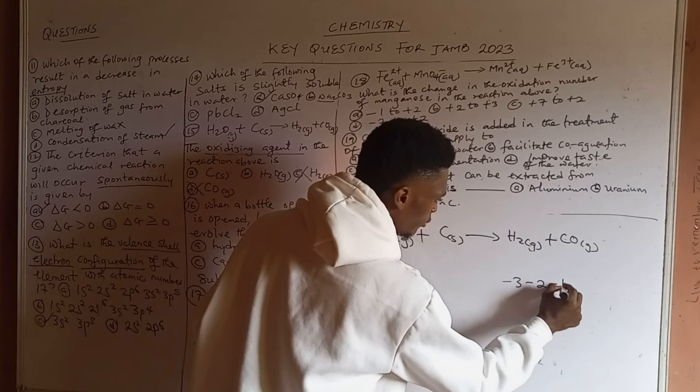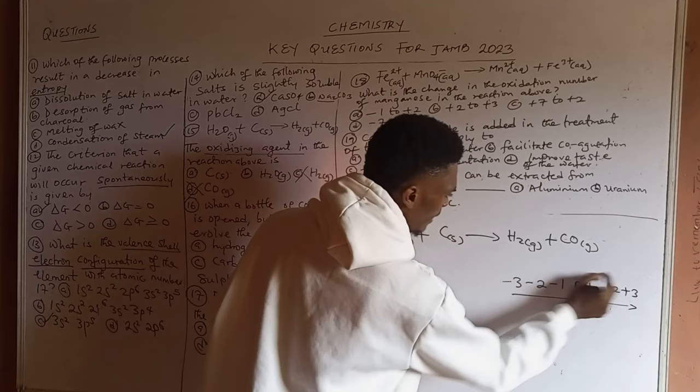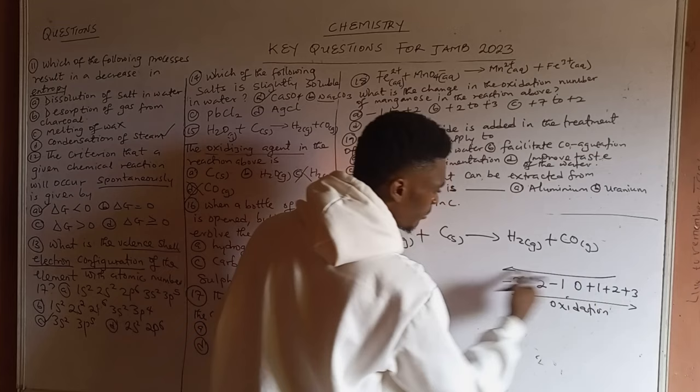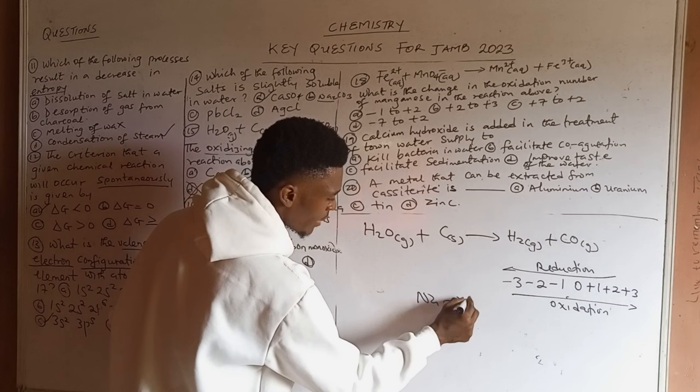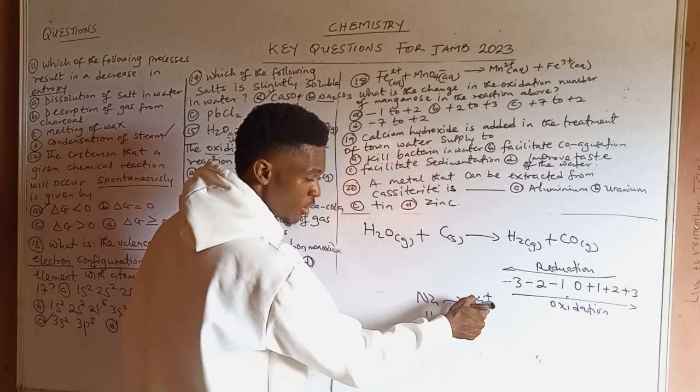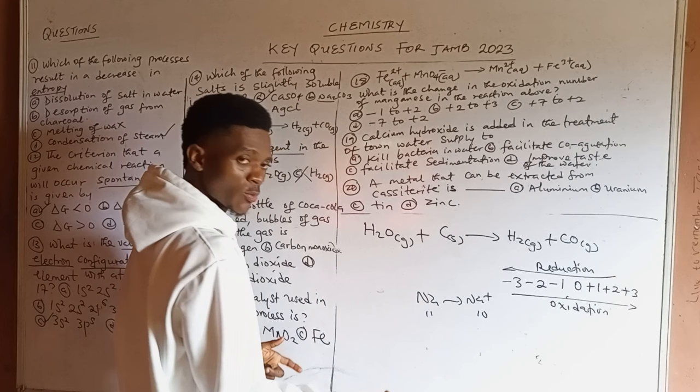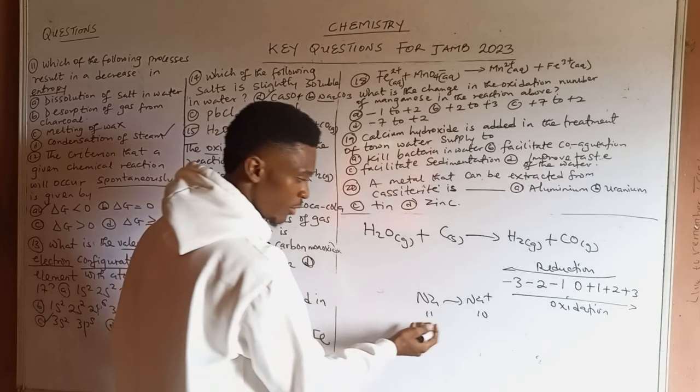Using the number line representation: oxidation state of carbon in C(s) is 0; in CO it is +2. From 0 to +2 moves in the positive direction — that is oxidation. Carbon was oxidized, making C the reducing agent. For oxygen, the oxidation state is -2 in both H2O and CO, so no change occurred for oxygen. Only hydrogen changed oxidation state (+1 to 0), confirming H2O is the oxidizing agent.